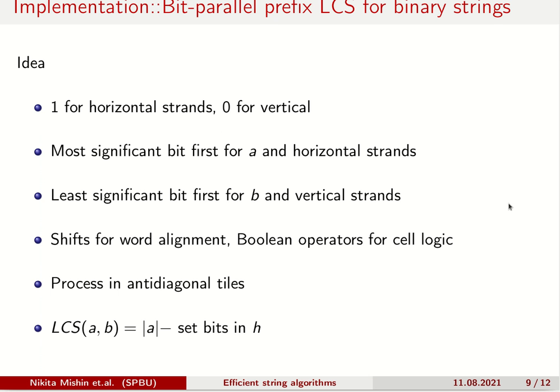Let characters of our input strings be from the binary alphabet, forget about strands numbers, set initially horizontal strands to 1, and vertical ones to 0. To check if the strands are previously crossed, we need to check if the horizontal strands index is less than the vertical one. Then embed string A into a sequence of machine words, so that within each machine word a group of characters are stored in the most significant bit first order. Do the same for string B, but with the least significant bit first order. Do the same for associated strands, then process it in anti-diagonal tiles, and in the end obtain prefix LCS via bit counting.